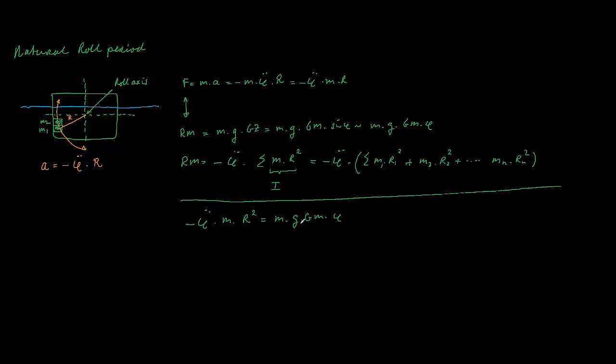What we can do is we rule out the mass because that's not interesting here, and we can say angular acceleration equals, so we do the minus over here, g times GM divided by the range squared times the angle.